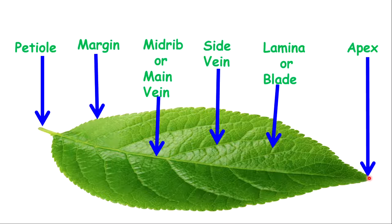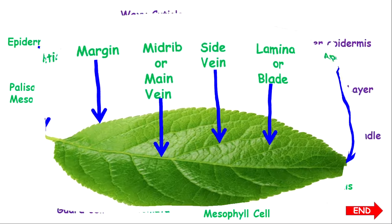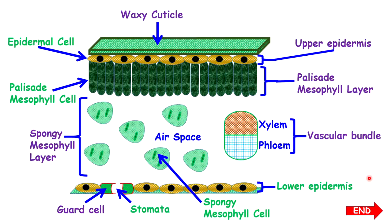So now we've looked at the external part of the leaf. It's time to go on the inside of this very thin structure. Now imagine this thin structure has so many internal parts — a very amazing structure which shows you the dynamics of creation. Now the outermost part of the leaf is called the waxy cuticle. There are two of them — one on the bottom and one on the top — and we're going to talk about them in a minute.